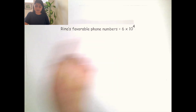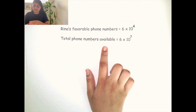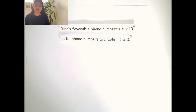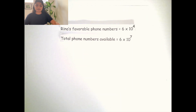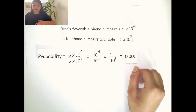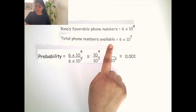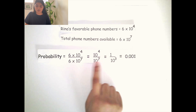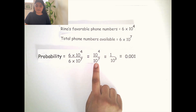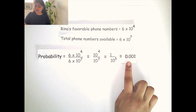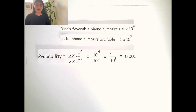Now that we know the total favorable phone numbers and the total phone numbers available, we can use the probability equation. Dividing Rena's favorable phone numbers by the total phone numbers available gives us 10 to the power of 4 divided by 10 to the power of 7, which simplifies to 0.001. Therefore, the probability that Rena will get her wish if numbers are assigned randomly is 0.001, or 1 over 1,000.